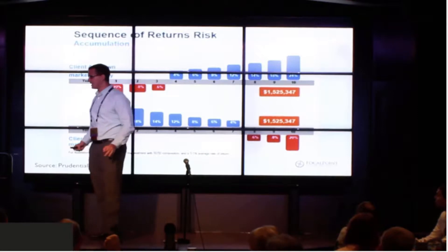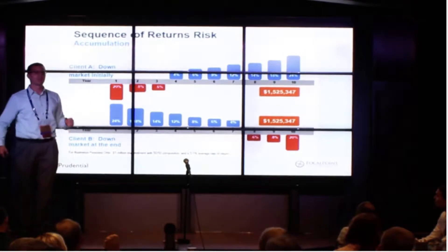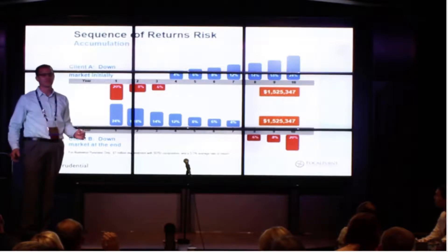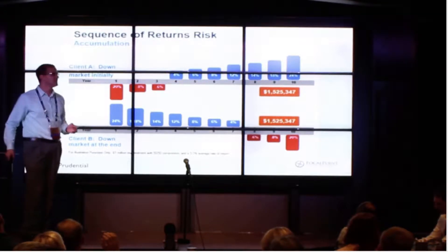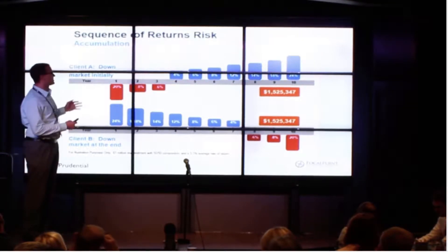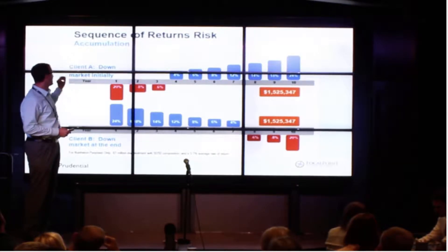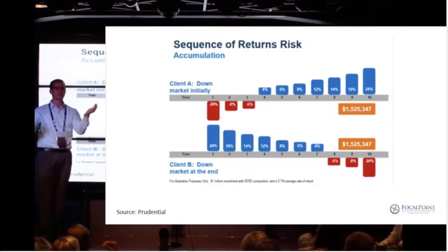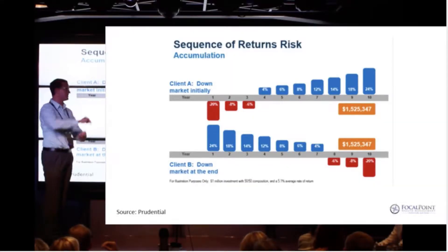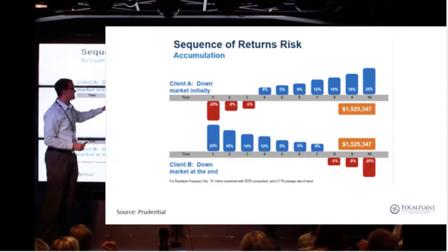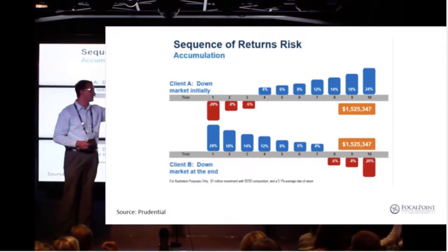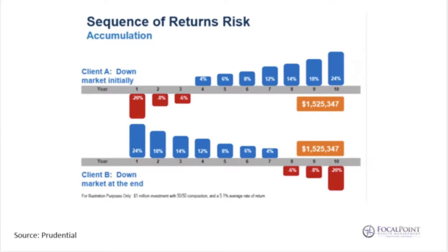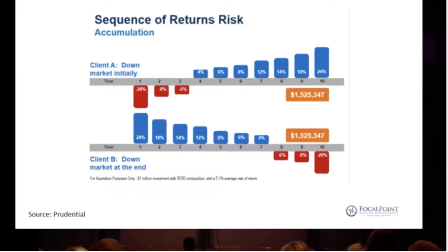One thing I really want to talk about today — what I want to scream from the top of a roof and shake people to understand — is the concept of Sequence of Return Risk. I'll start with an example showing Person A and Person B, who have the exact same returns except they're the mirror of one another, just flipped, the inverse. Since they're accumulating funds, they both end up with the same amount of money 10 years later because they're not withdrawing any funds. So there's no sequence of return risk when you are accumulating funds.